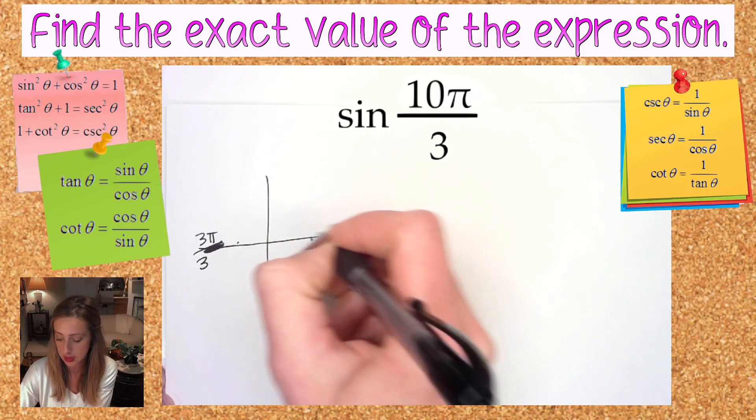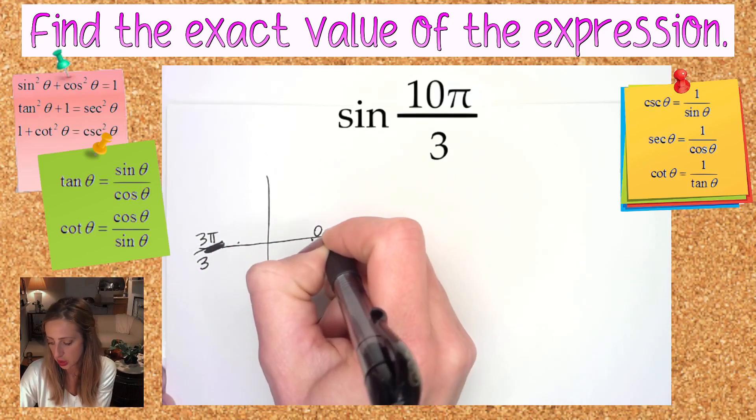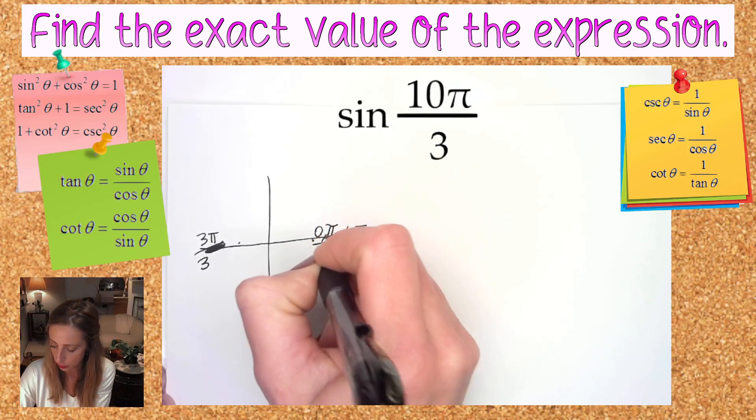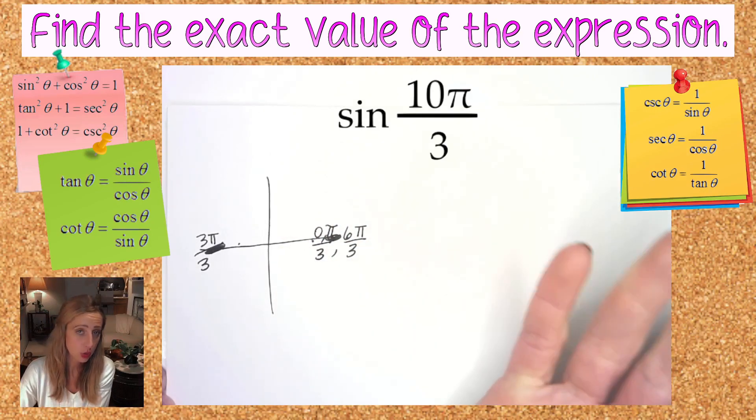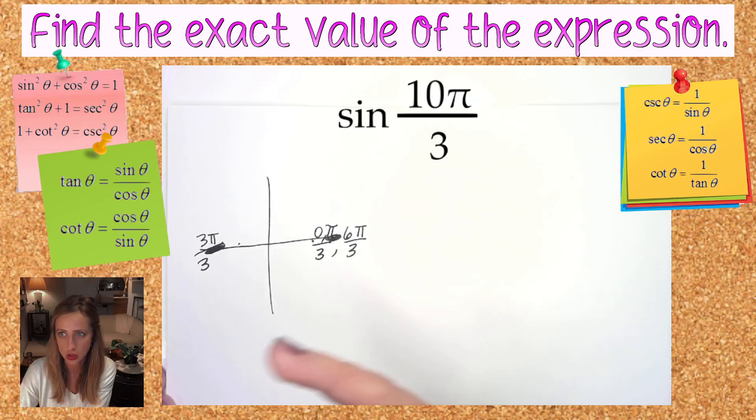If I go the same distance, I'm now at 6π over 3 because I was initially at 0 or 0π over 3. 6π over 3 does reduce to 2π. I'm just counting by π over 3s, so I'm going to write everything like that instead.